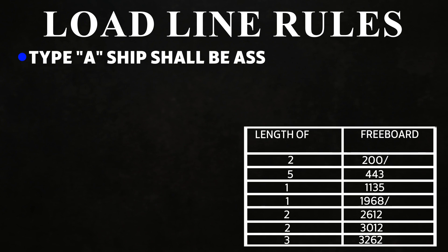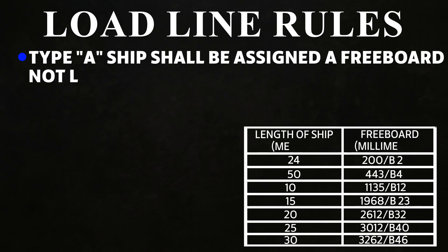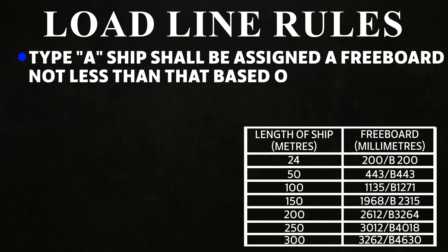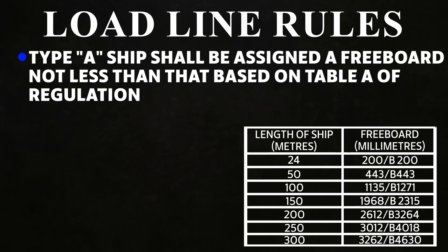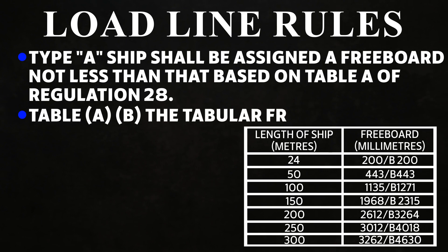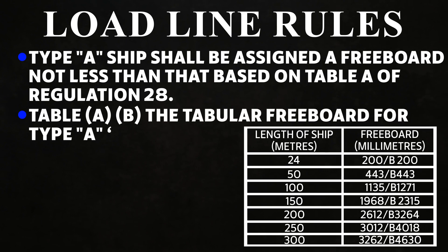A Type A ship shall be assigned a freeboard not less than that based on Table A of Regulation 28. Tables A and B give tabular freeboard for ship types, based on the ship's length in meters, with freeboard values in millimeters.